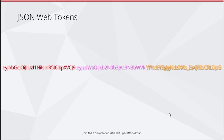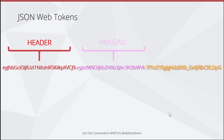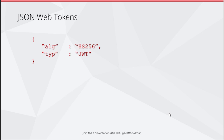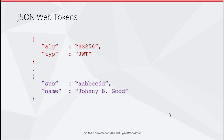The OAuth 2 standard doesn't require you to use a JSON Web Token — there are other kinds, but you'd be very unlikely to encounter them. A JSON Web Token is basically three Base64-encoded strings separated by dots. It's made up of three parts: the header, the payload, and the signature. The signature is important because the token is not encrypted — it's signed but not encrypted. You could decode it with a Base64 decoder and read the raw JSON.